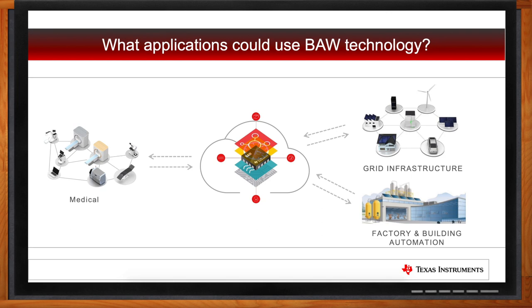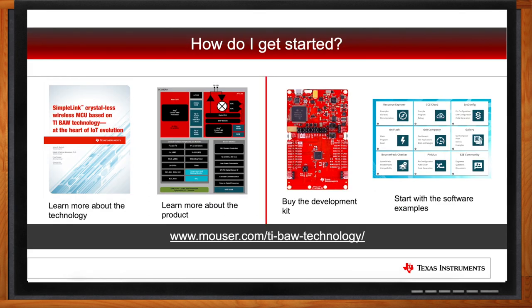To get started with BAW, the one-stop shop is www.ti.com/BAW, where you can learn more about the technology and the CC2652RB product — the industry's only crystal-less wireless MCU solution with BLE, Zigbee, and Thread connectivity. If you want to get hands-on, there is a low-cost development kit available with the CC2652RB on board. You can purchase it, plug it right in, and a whole set of training and software examples will get you up and running in about five minutes.